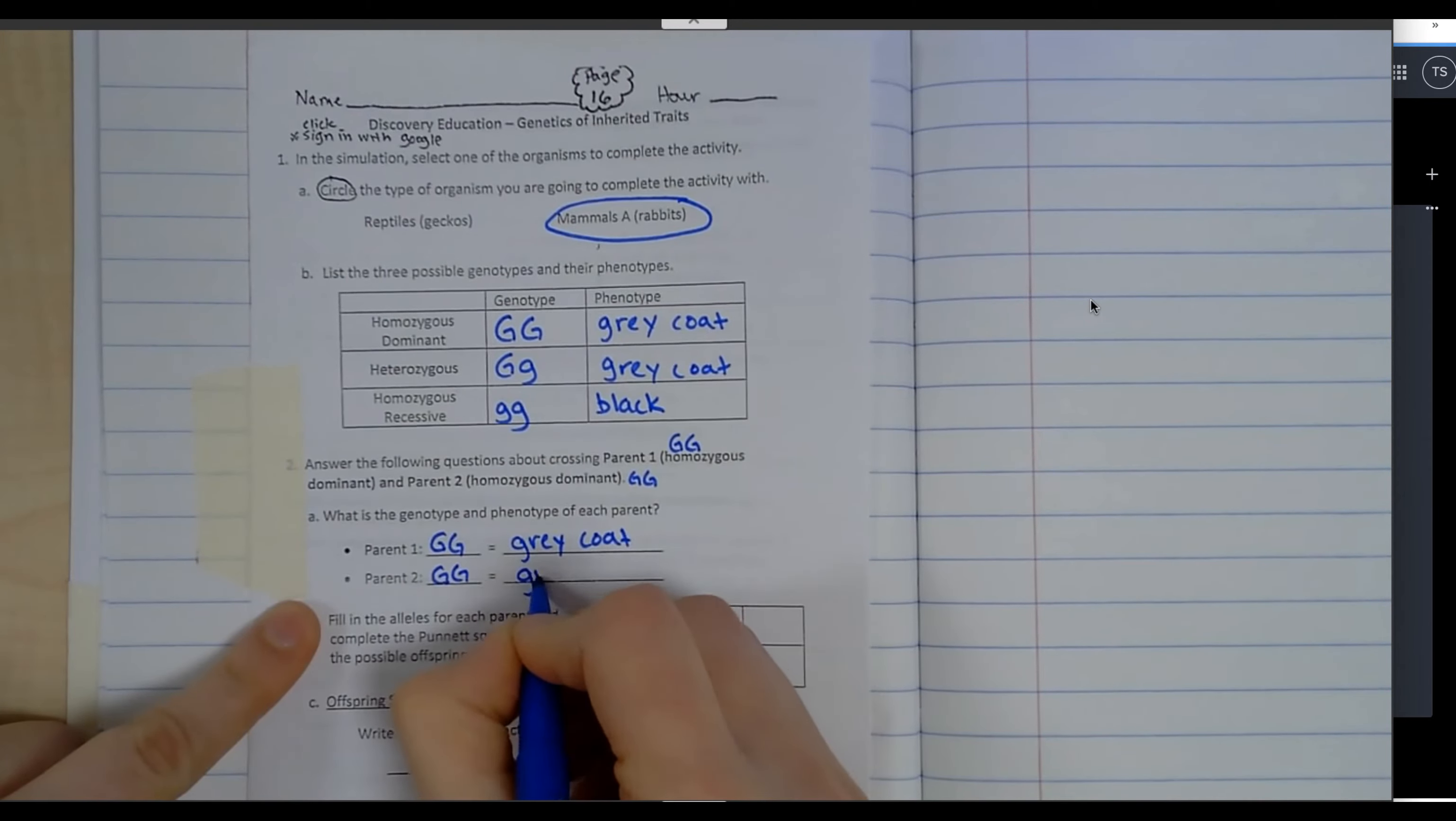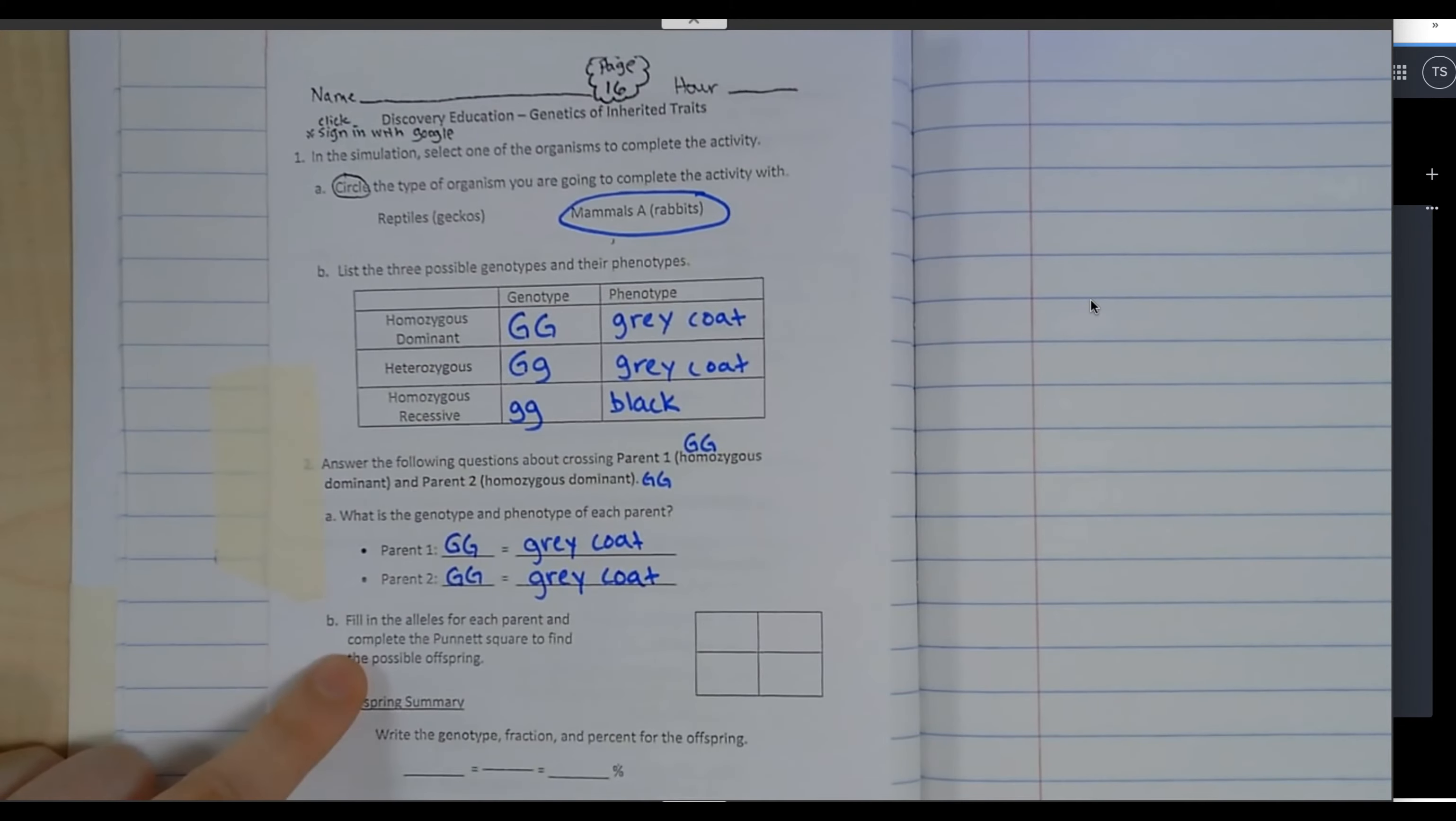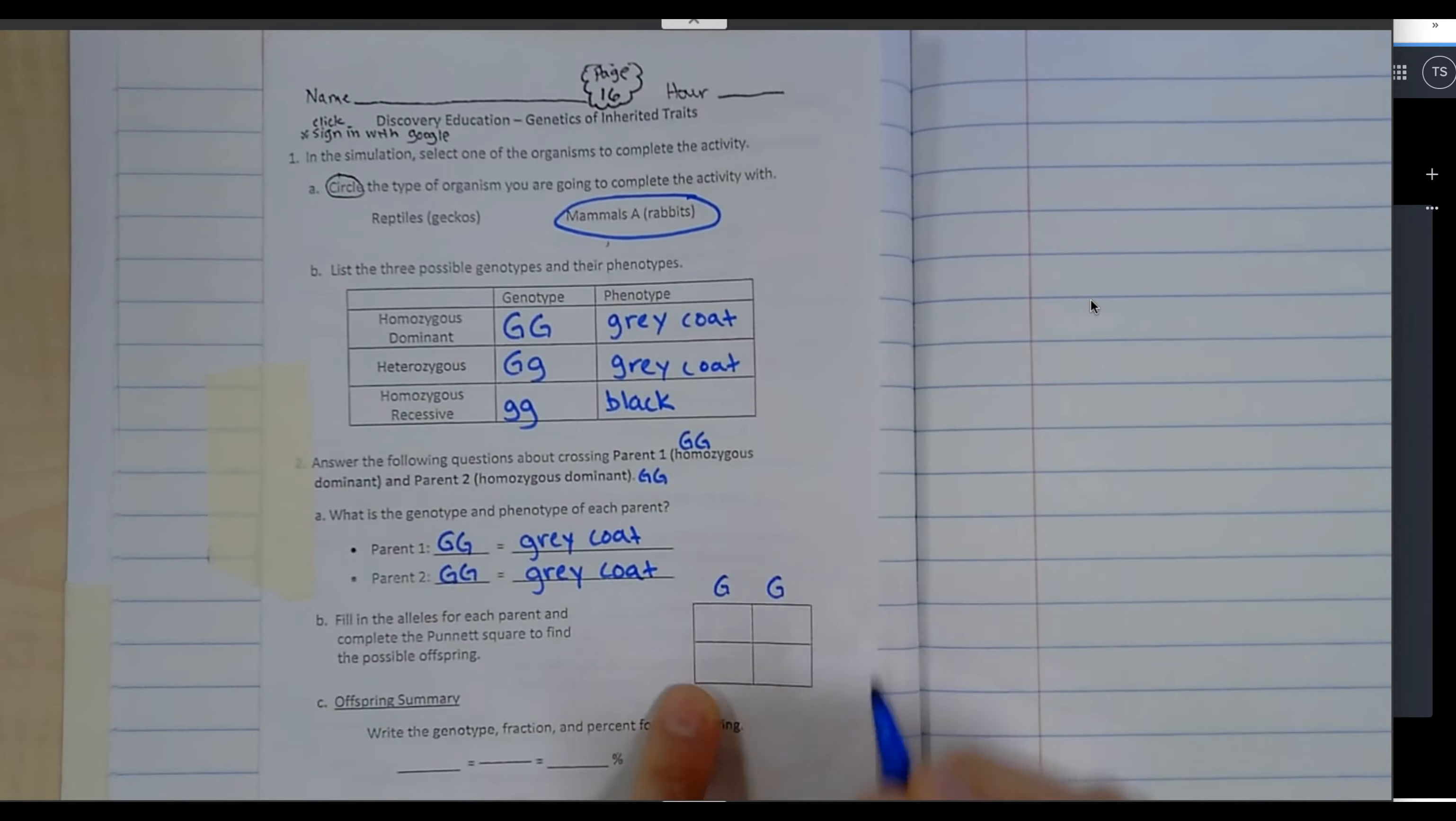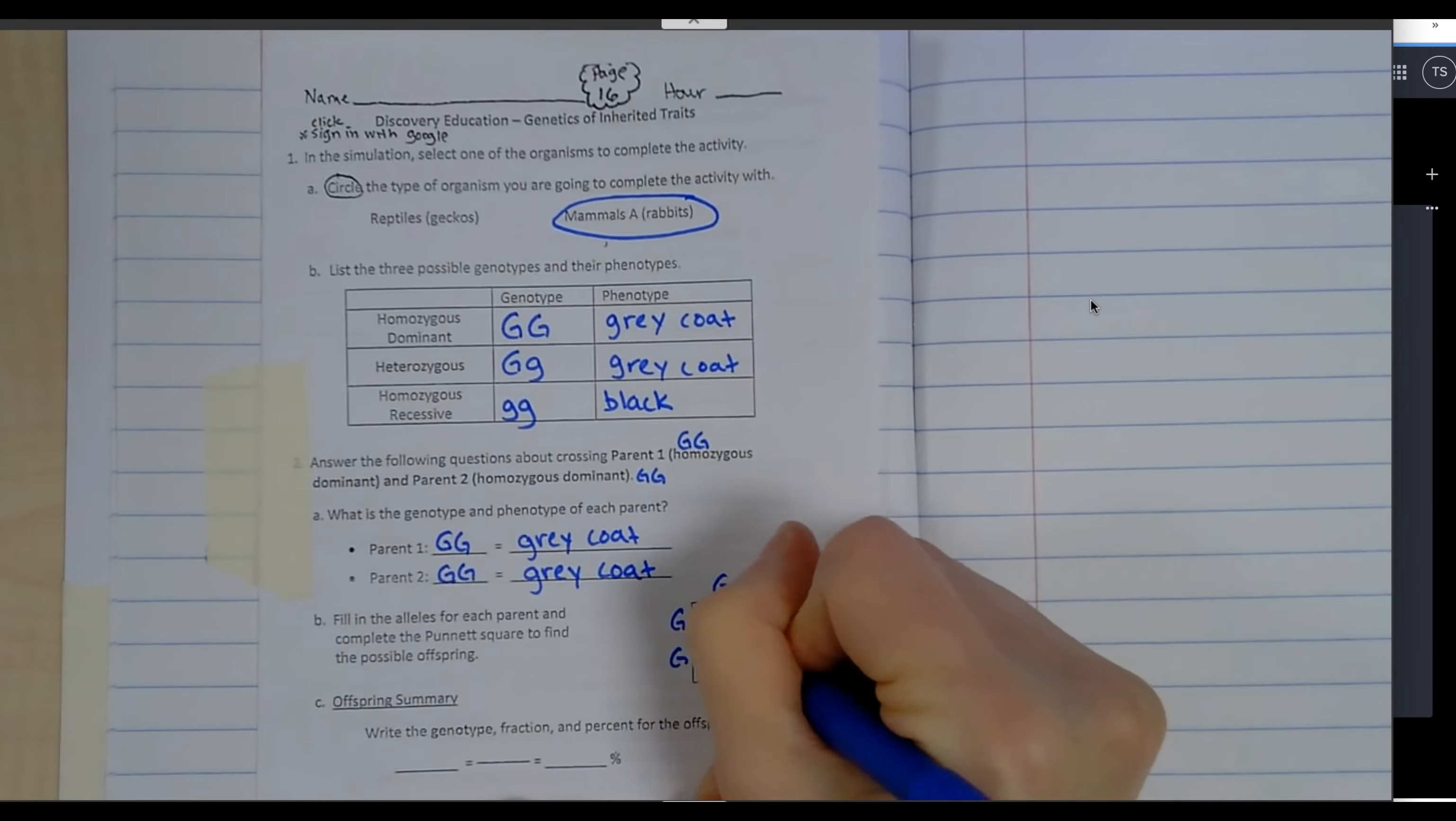It says fill in the alleles for each parent and complete the Punnett square to find the possible offspring. I've got my first parent along the top of the box, my second parent along the side of the box, and I'm going to go ahead and fill it in.